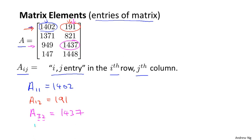And finally, A_41 is going to refer to this one, right? Fourth row, first column is equal to 147.